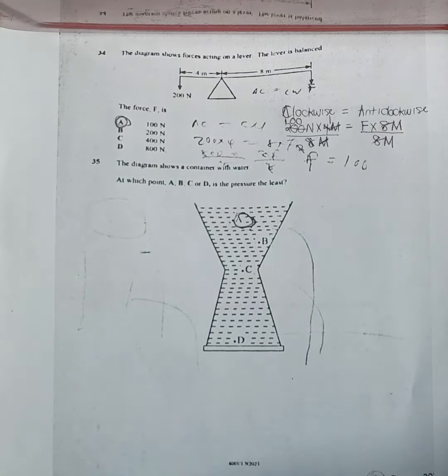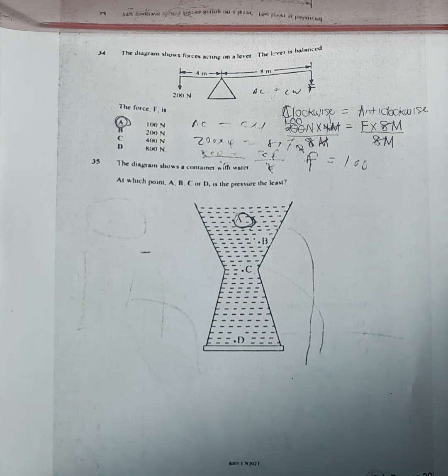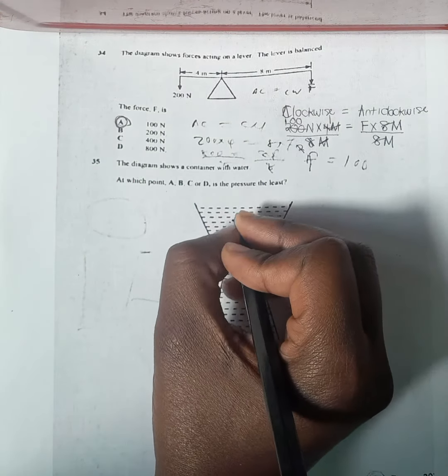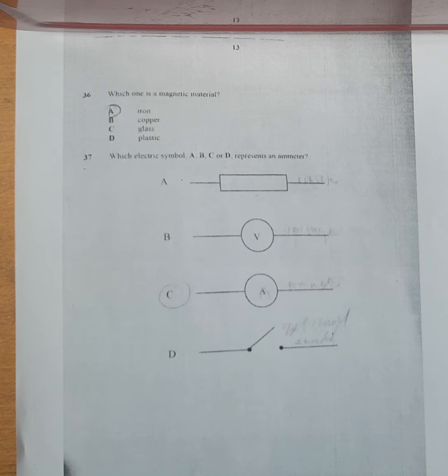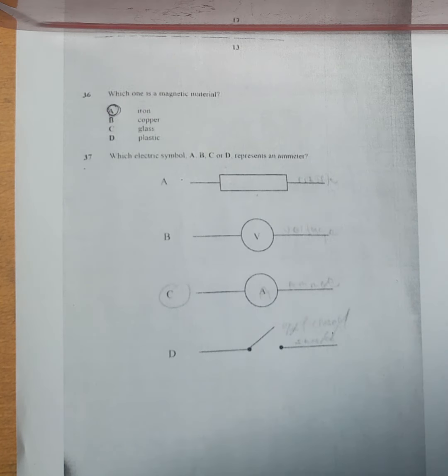Number 35: the diagram shows a container with water — at which point is the pressure the least? We select A. Pressure is least at the top and highest at the bottom. Number 36: which one is a magnetic material? We select iron, which is A. Iron is a magnetic material because it is attracted by magnets. Other magnetic materials include nickel and cobalt.